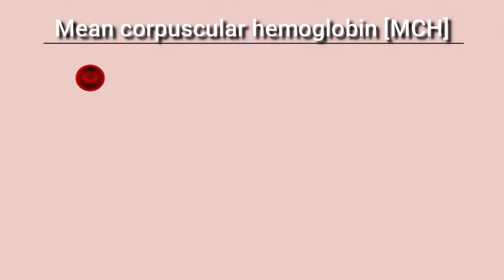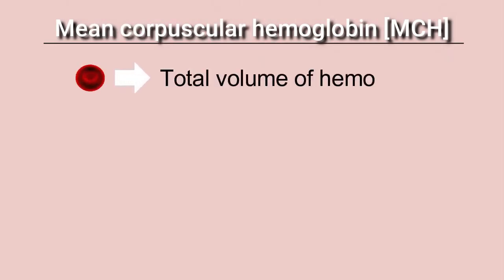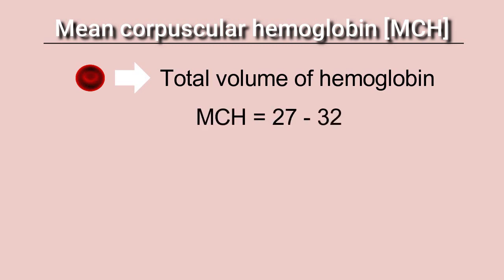MCH means mean corpuscular hemoglobin — that is, on average, the total amount of hemoglobin contained per single RBC. It is a miniscule amount and is measured in picograms. The normal value of MCH ranges from 27 to 32 picograms.